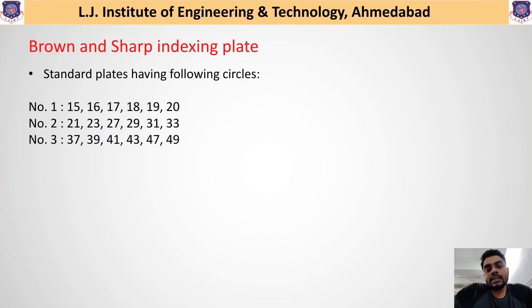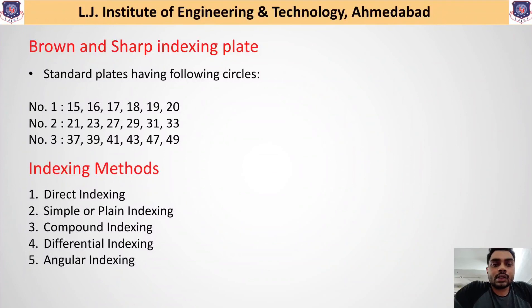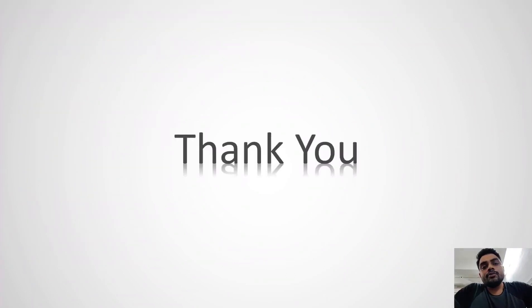This standard indexing plate helps obtain different numbers of teeth on gears during machining. For this purpose, different indexing methods are available: direct indexing, simple or plain indexing, compound indexing, differential indexing, and angular indexing. These different indexing methods will be studied in further lectures, starting with direct indexing and simple or plain indexing in the next lecture. Thank you.